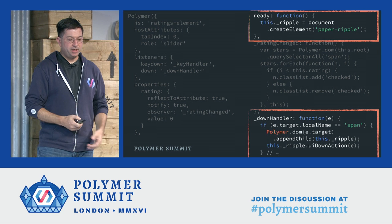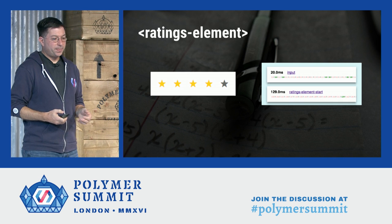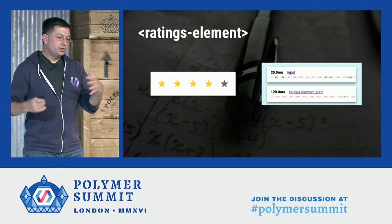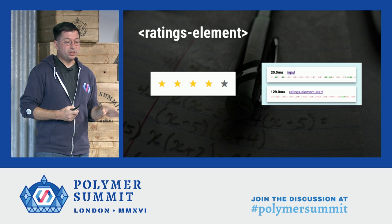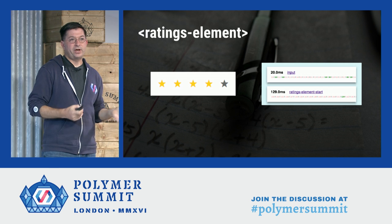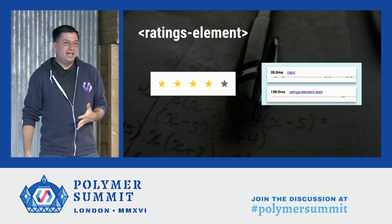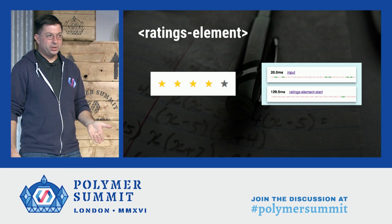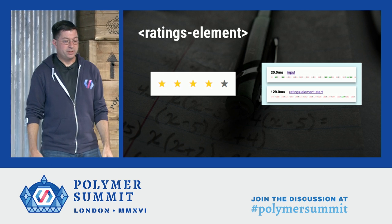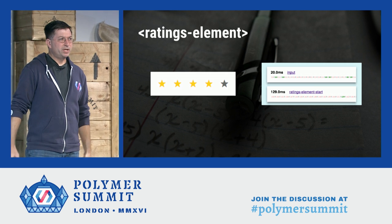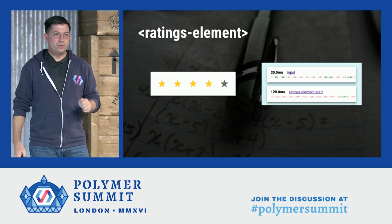We can use Polyperf to benchmark this, comparing it to the native input element by rendering 250 instances in each test. In absolute terms the cost of the ratings element is pretty cheap — about half a millisecond. But comparing it to native input, it's actually about six and a half times slower than input. So it's not quite where we want it to be. Now we're going to go step by step to find ways to reduce the cost of this element.